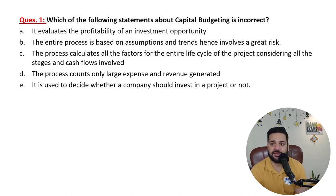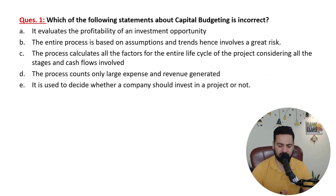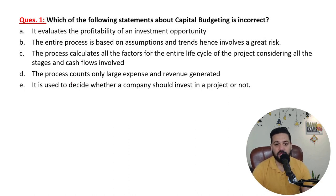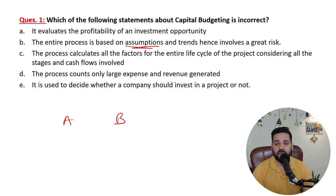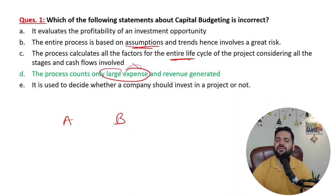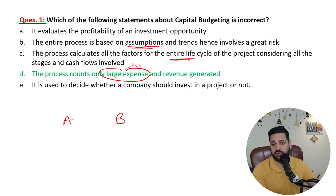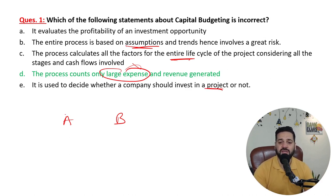Which of the following statements about capital budgeting is incorrect? Capital budgeting evaluates the profitability of an investment opportunity — correct. The entire process is based upon assumptions — also correct. The process calculates all the factors for the entire life cycle — correct. 'Only for large expenses' is false, because large expense is a very subjective thing. Capital budgeting is used to decide whether the company should invest in a project or not — that decision is what capital budgeting is for.